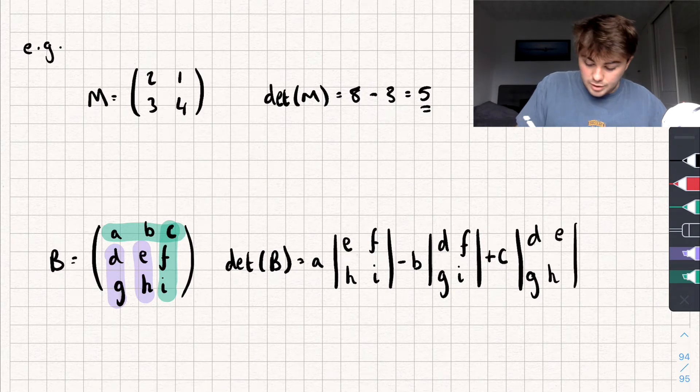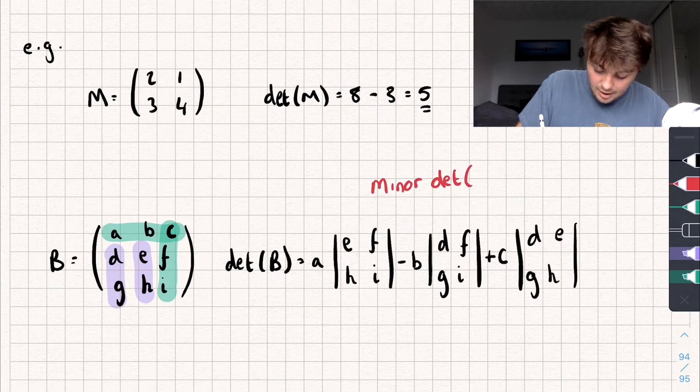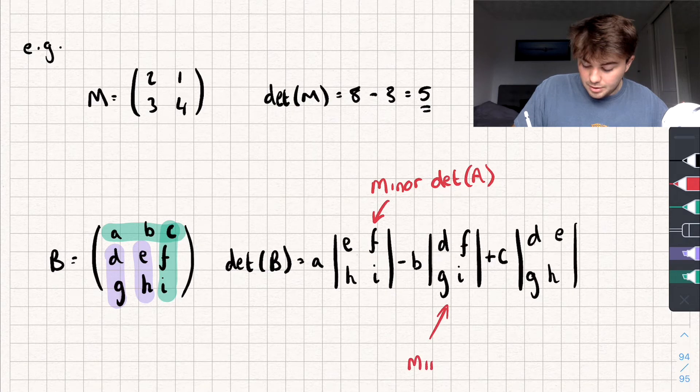Now, I guess I can write it down, so this would be the minor determinant of a, this one here. This would be the minor determinant of b, and so on. Right, hopefully that makes sense.